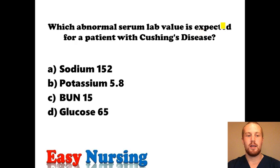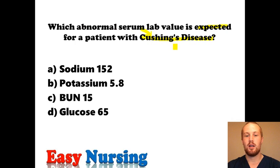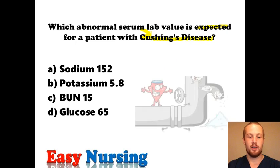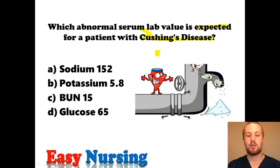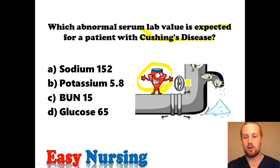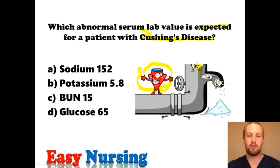Which abnormal serum lab value is expected for a patient with Cushing's? Remember, aldosterone tells the body to hold on to salt and hold on to water. With Cushing's, you have too much aldosterone as well as cortisol and androgens. So you're going to see a high salt level. The normal sodium is 135 to 145, so an elevated sodium would be typical of Cushing's — that's going to be our answer.